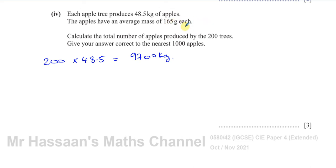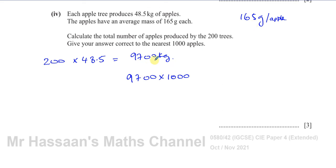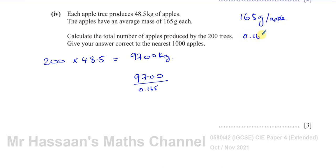One apple has an average mass of 165 grams. So to find the number of apples, divide 9,700 kilograms — but change it into grams first so the units are compatible. Kilograms divided by grams won't work; you need consistent units. Alternatively, you can change 165 grams into kilograms — that's 0.165 kilograms per apple. Then divide the total kilograms by the mass per apple in kilograms to get the number of apples.